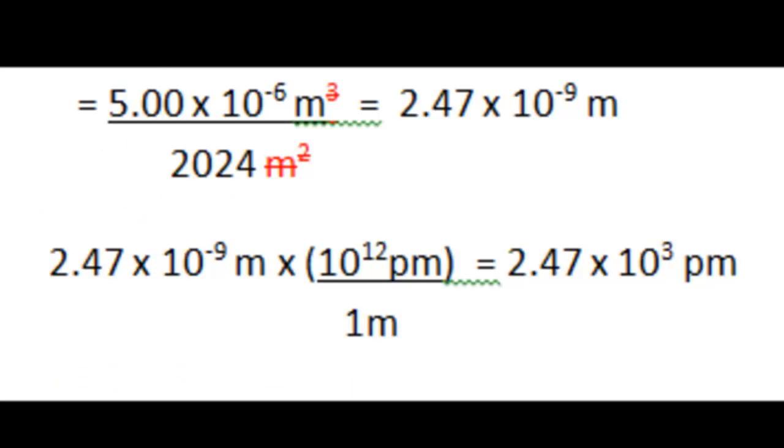Although we have an answer for the height, the unit of meter needs to be converted to picometers, because that's what the problem asked us to determine, was the height in picometers. So, one final conversion, and that is there's 10 to the 12th picometers in one meter. And our final answer is 2.47 times 10 to the 3rd picometers, or 2,470 picometers.